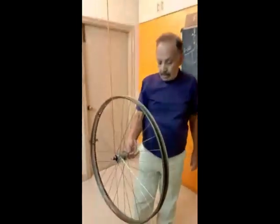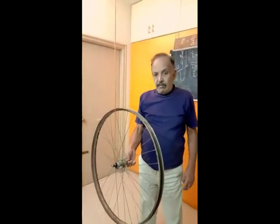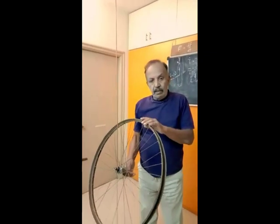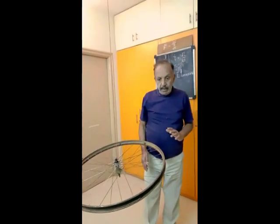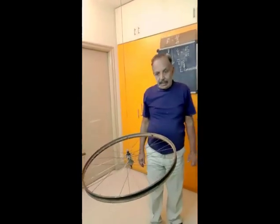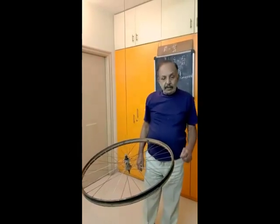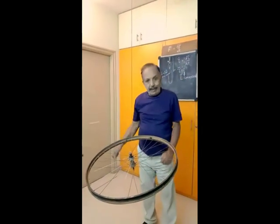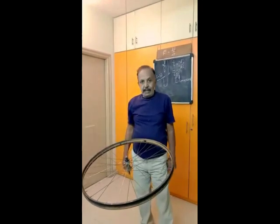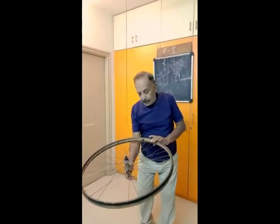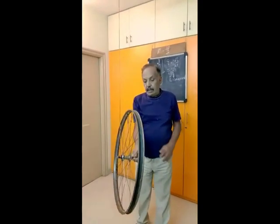One way to demonstrate this is using a cycle wheel, typical of a cycle. The cyclist, when riding on the cycle, is balanced — he doesn't fall. But if the cycle slows down and comes to rest, the cycle falls. So unless it has got a stand, cycles cannot be put to rest. All cycles have got a stand; otherwise, we just put the cycle there and go away. So under what conditions does the cycle hold upright, and under what condition does it fall?